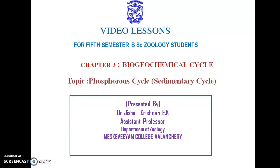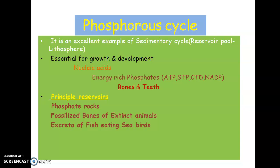Good morning everyone. We are discussing the last topic of this chapter, which is the phosphorus cycle — an excellent example of a sedimentary cycle. In a sedimentary cycle, the reservoir pool of the concerned element is a sediment or lithosphere compound. Based on the nature of the reservoir pool, biogeochemical cycles are divided into two types: gaseous cycles and sedimentary cycles.